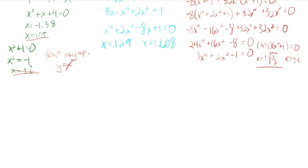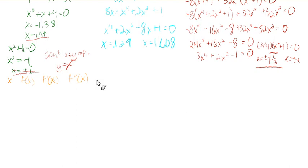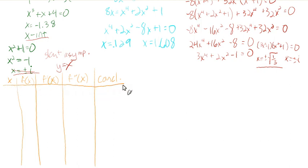Now we take all this information and put it into a chart. We'll look at values of x, f(x), f′, and f″ on each interval to draw conclusions. The key x-values of interest are: -1.38, 0.129, 1.608, and ±√(1/3). We start from negative infinity going right — the first point we hit is x = -1.38.